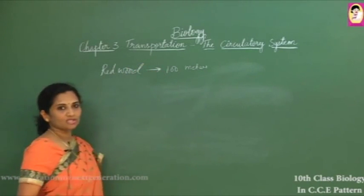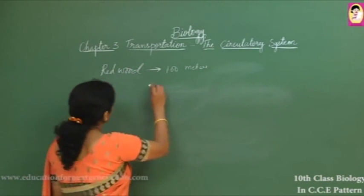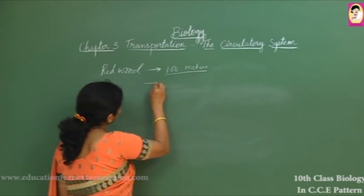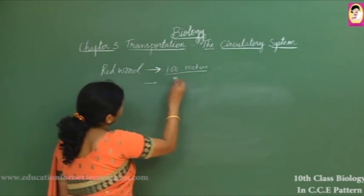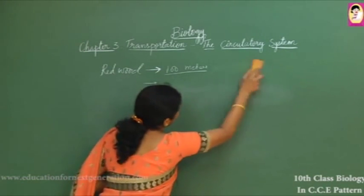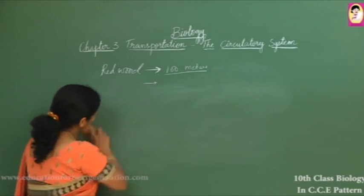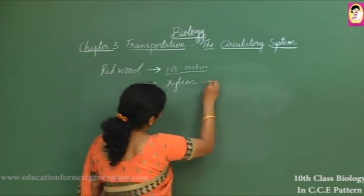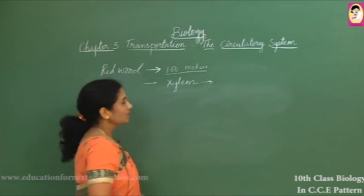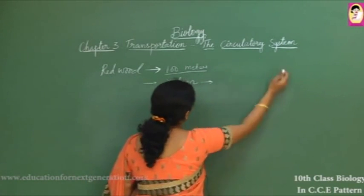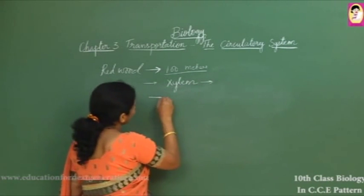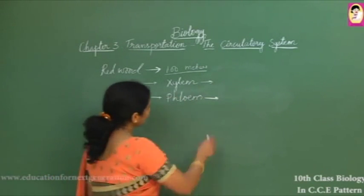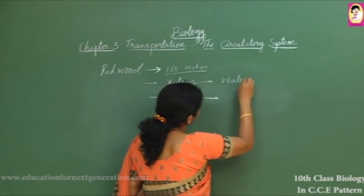For tall trees like redwood or eucalyptus, which are among the tallest trees in the world, long-distance transportation requires specialized cells. Water and food materials are transported either in a unidirectional or bidirectional way through structures like xylem — hollow tubular cells that help in the conduction of water — and phloem.